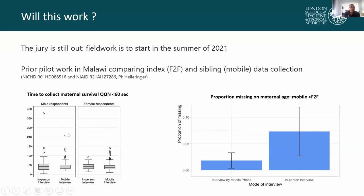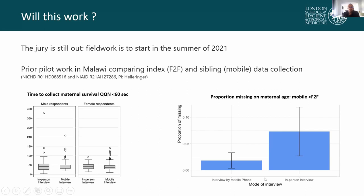On the left-hand side, we show the time necessary to collect information about maternal survival. These survey modules are very short — the information can be collected in under one minute per parent in most circumstances — and there are no big differences between in-person and mobile phone interviews. On the right-hand side, we show the proportion of missing values on a key indicator such as maternal age. The number of missing values between the mobile phone interview and the in-person interview is not very different; in fact, it was even slightly lower in the mobile phone interview context.